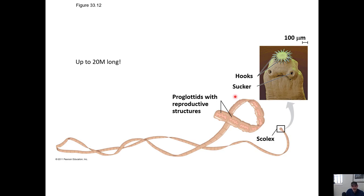Here's an image of one - you can see the head has suckers and hooks that attach to an intestine, and it has these repeating units of reproductive structures. If you've had a dog infected with tapeworms, it can look like there's rice in their feces because of these proglottid structures breaking off, each full of eggs. The worm is hoping another animal will ingest some of that and become infected, allowing the tapeworm to live inside their digestive system and absorb nutrients.